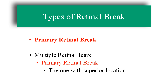We have also said that these rules allow us to locate the primary retinal tear that causes the retinal detachment. But what happens when there is not a single break? In cases of multiple retinal tears, the retinal hole that is located in the highest place is the one considered the primary retinal break.